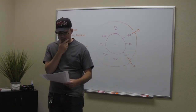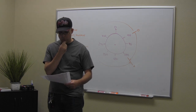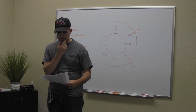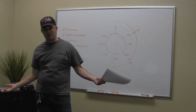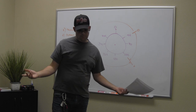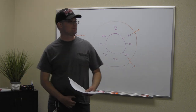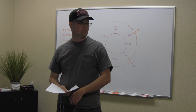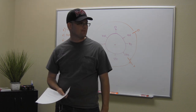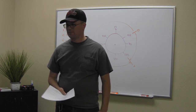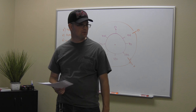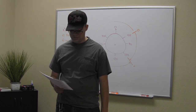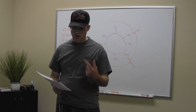Question number three I screwed up, so skip that one. Question four: which of the following allows a static GNSS survey to be placed on the US National Spatial Reference Frame? When I say US National Spatial Reference Frame, that's the technical term for the system used for state plane coordinates. It's a federal system. Which agency maintains it? NGS — National Geodetic Survey. The answer is D: NGS CORS, Continually Operating Reference Station.